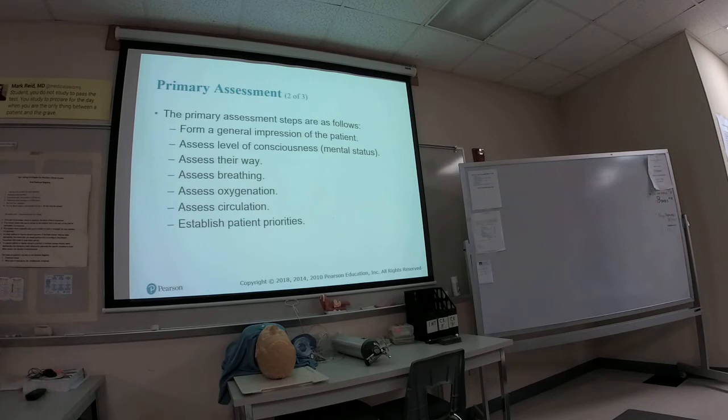And then ABCs on the conscious patient. Check level of consciousness, AVPU, right? And determine if they're conscious and they're alert. Then A and O times four, person, place, time, and event, to see at what level the level of consciousness is. And then use the AVPU, like if they are responsive to verbal, painful stimulus, unresponsive.